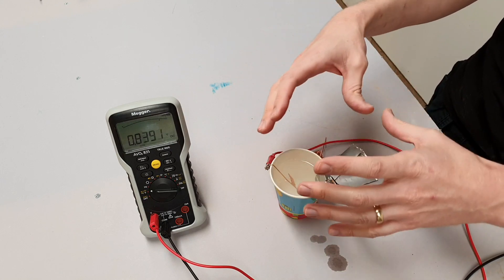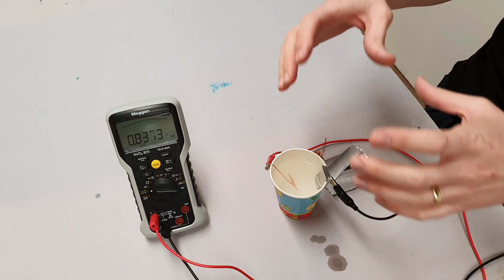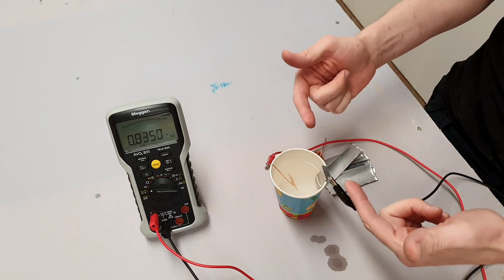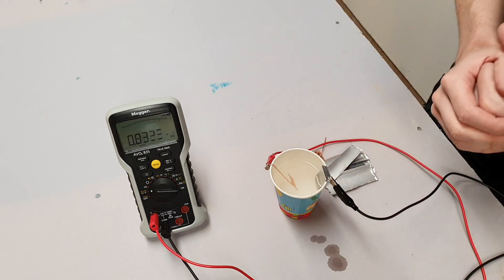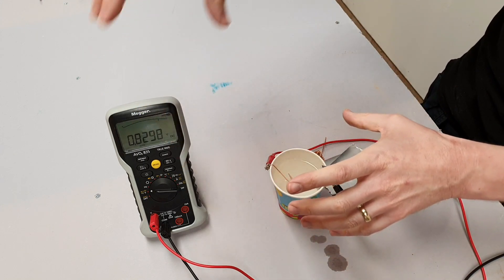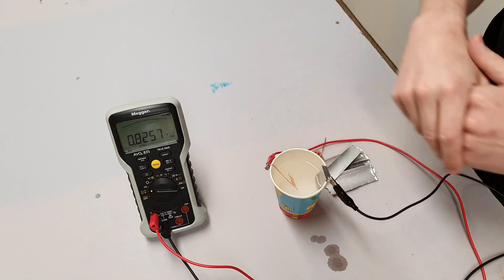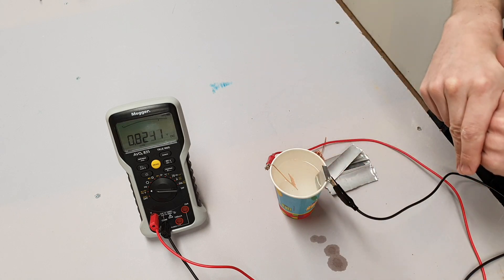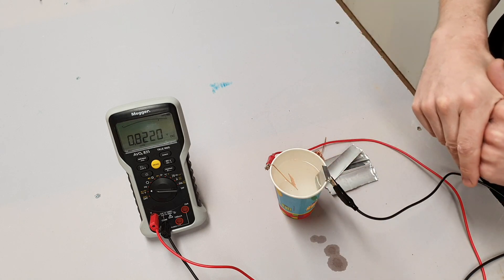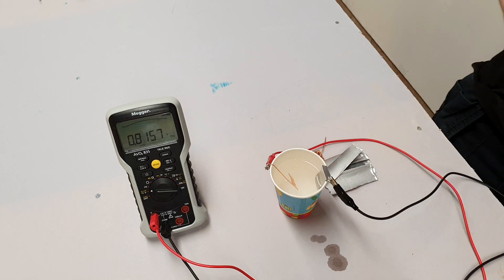We can't technically call this a battery because there's only one unit here. What we've created here is what's called a cell. A cell is basically a little device that will produce electricity - a chemical reaction takes place inside it and it gives a voltage output. If you connect lots of those cells together, then you create a battery.